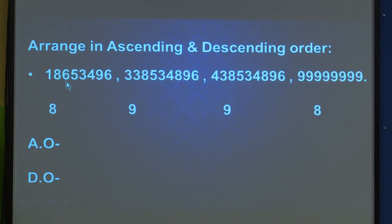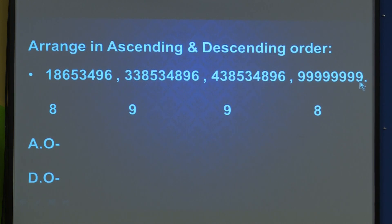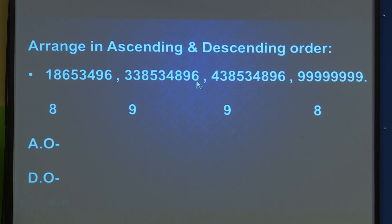So the ascending order is: 18653496 first, then 99999998 second, then the 9-digit number starting with 33 is third, and the 9-digit number starting with 43 is our fourth number in ascending order.